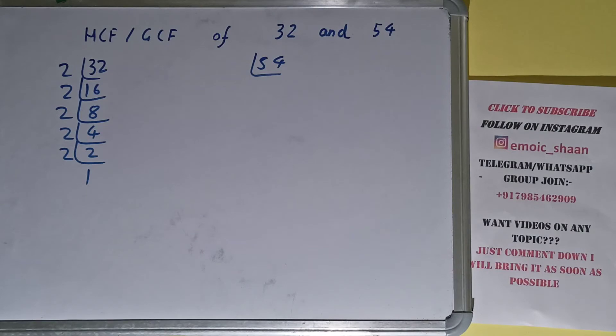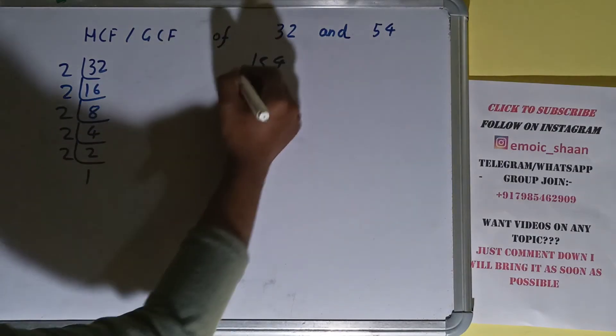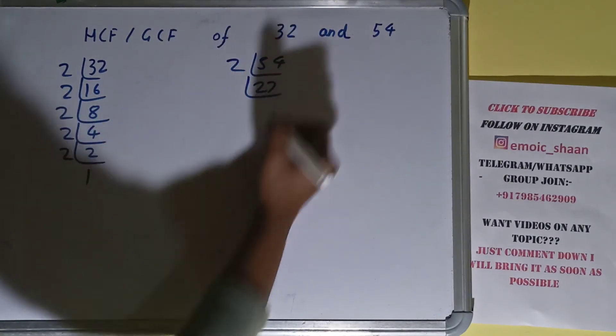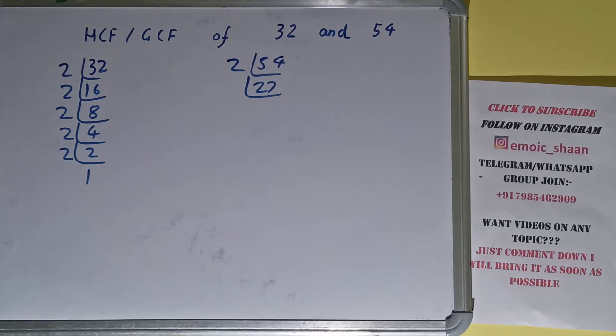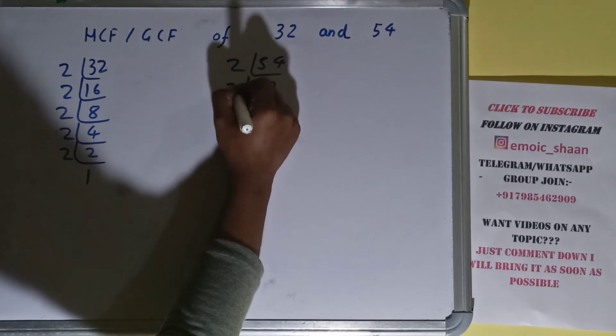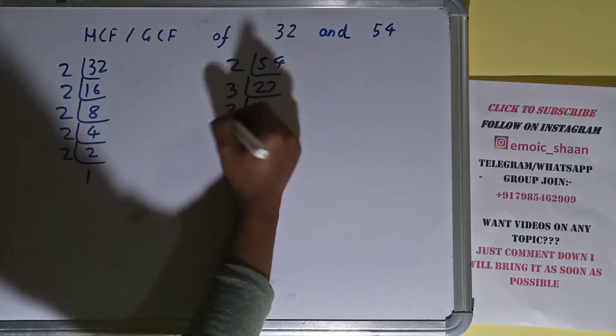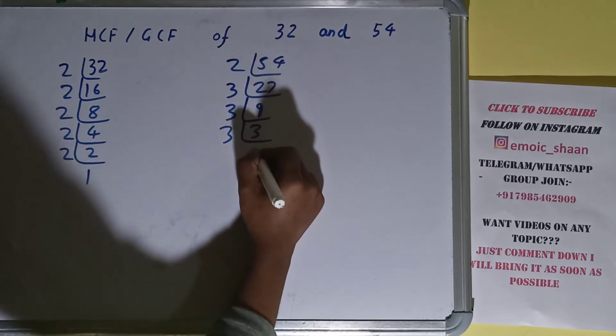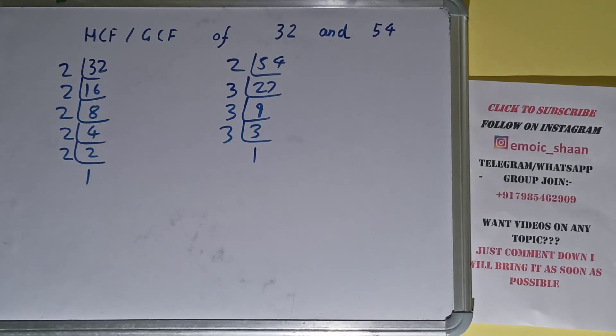Now we need to do the same with the number 54. Is 54 divisible by 2? Yes, it is. We'll have 27. Is 27 divisible by 2? No. So we'll check with the next lowest prime number, that is 3. Is 27 divisible by 3? Yes, it is. We'll have 9. 9 is again divisible by 3, we'll have 3. 3 is again divisible by 3, we'll have 1. So we are done with the prime factorization step.